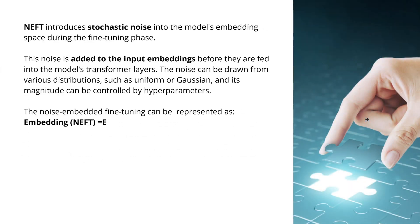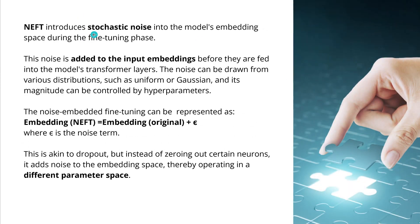What are noisy embeddings? Noisy embeddings are stochastic noise that you add to the model's embedding space during fine-tuning. This noise is added to the input embeddings before they are fed into the LLM's transformer layers. The noise can be generated from various distributions — uniform or Gaussian — and you have hyperparameters to optimize this.